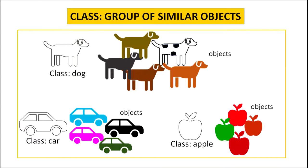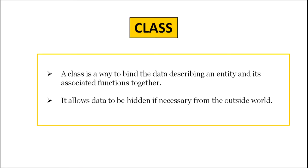Here, class dog defines how all dogs will look like and what all actions they can perform. So we can say that class is a blueprint to create objects and an object is an instance of a class. Classes and objects are fundamental components of object-oriented programming. A class in object-oriented programming is defined as a way to bind the data describing an entity and its associated functions together. It allows data to be hidden if necessary from the outside world.